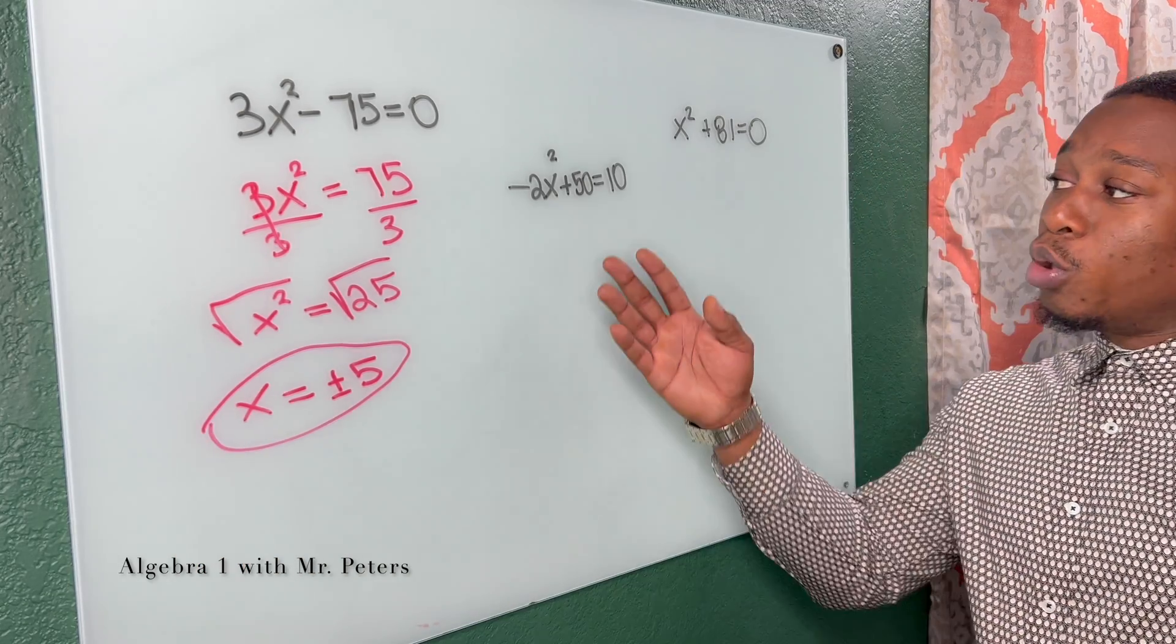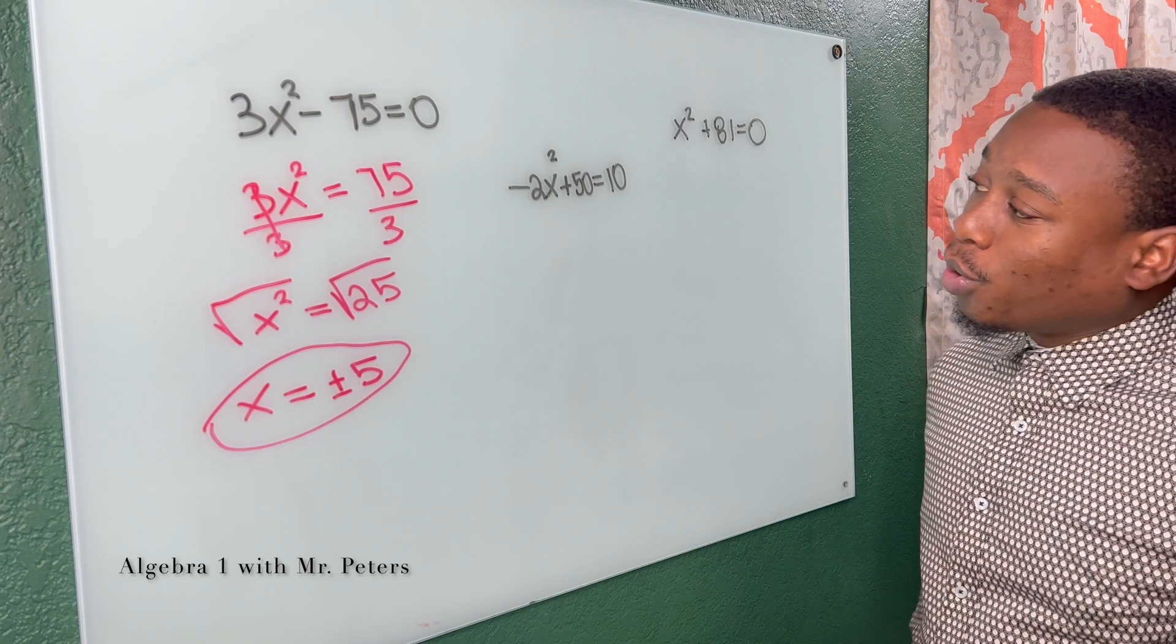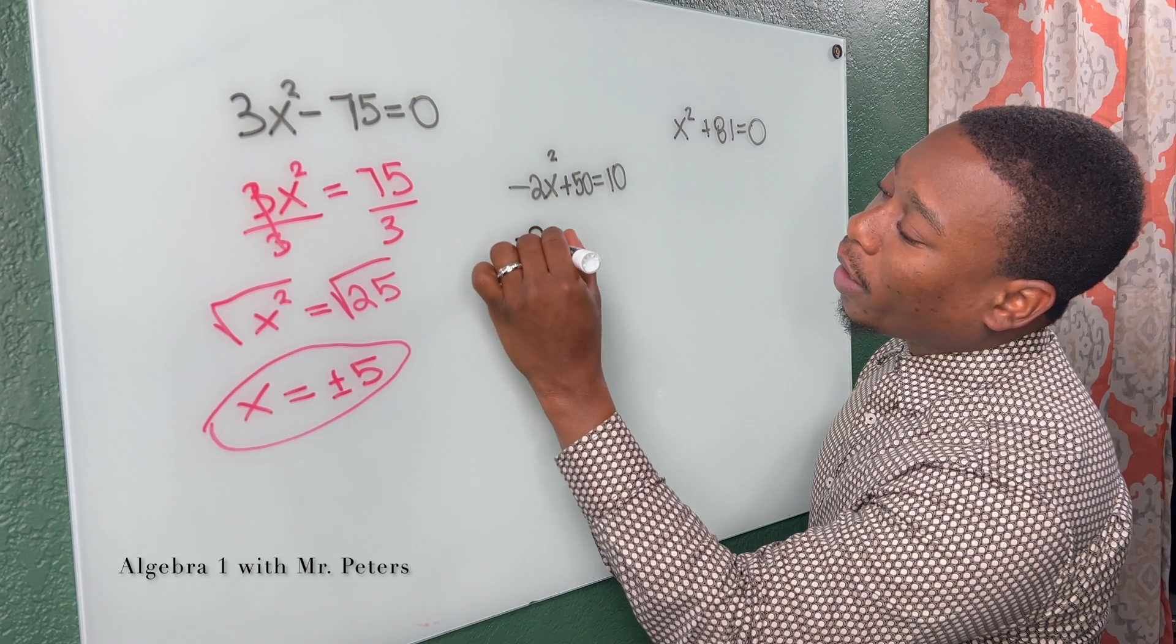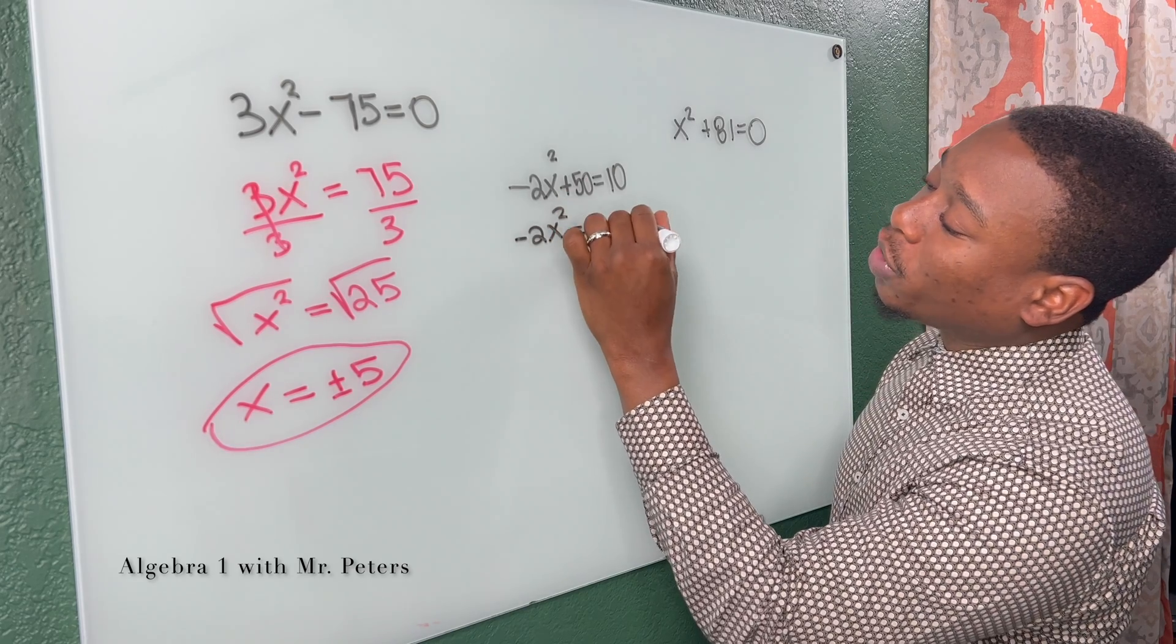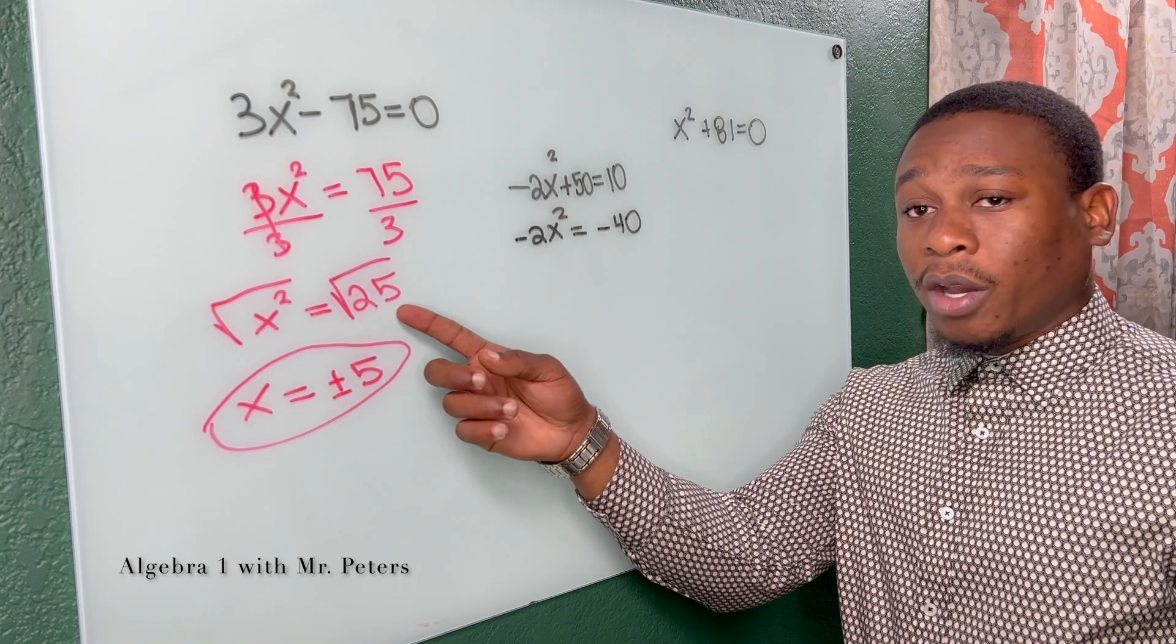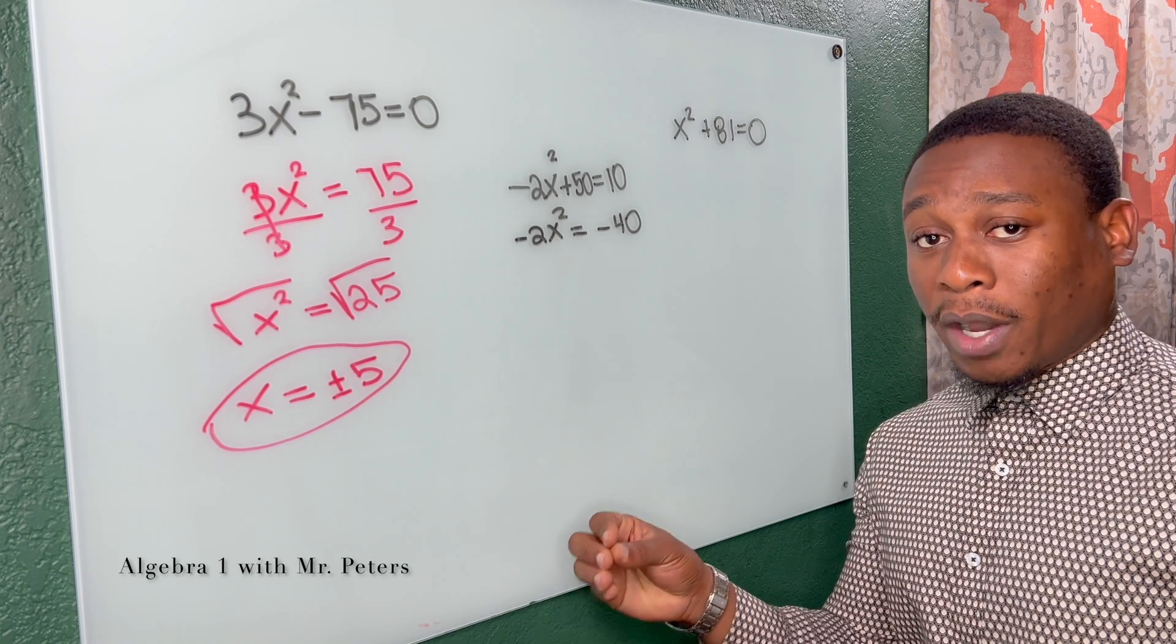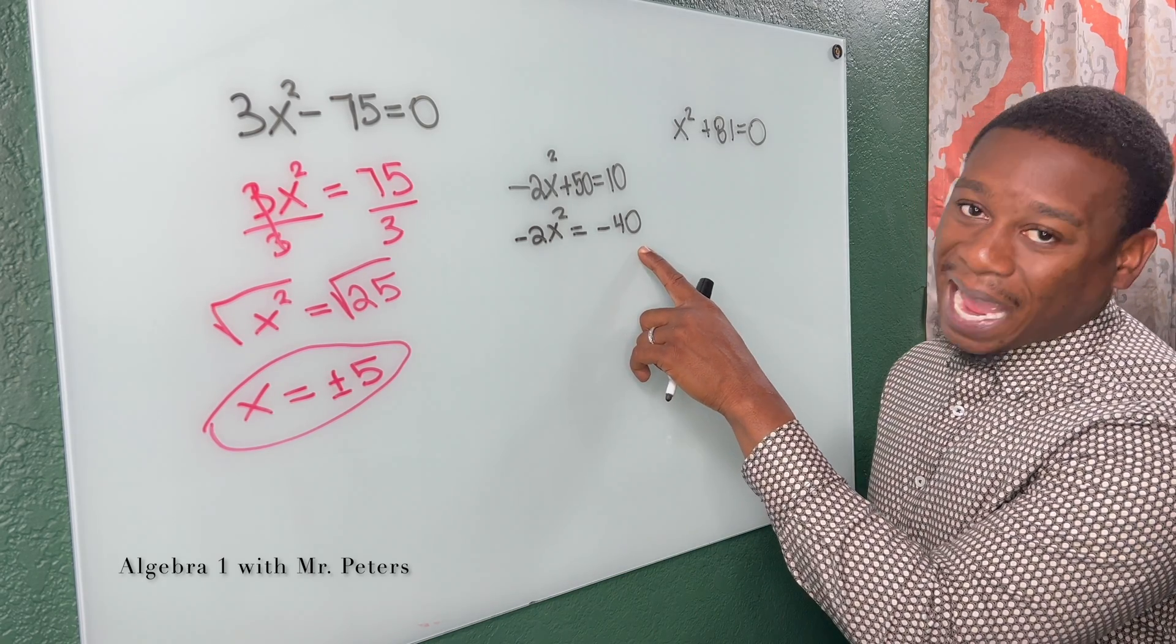Now let's say if we go over to our second equation. Same exact process. So when we look here, we need to move 50. So negative 2x squared is equal to 10 minus 50, which is negative 40. So remember, when we're taking the square root of any number, it has to be positive. We can't do that unless we're talking about imaginary numbers. And right now we're not. So this should always raise the eyebrow.